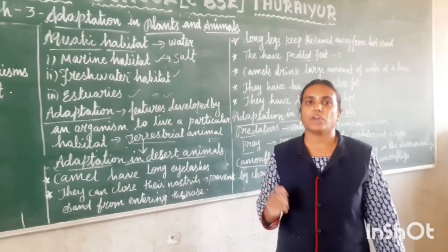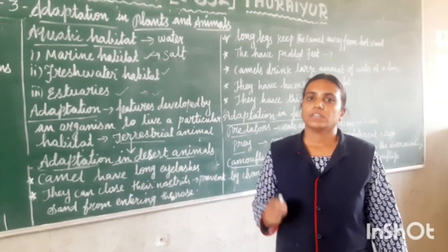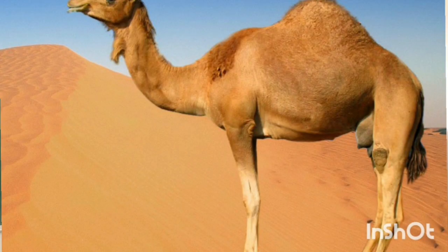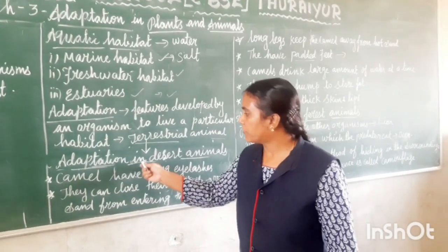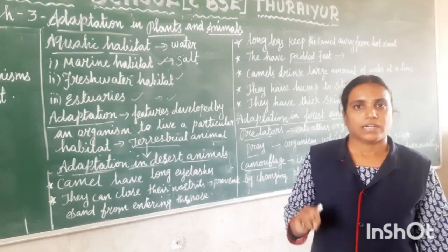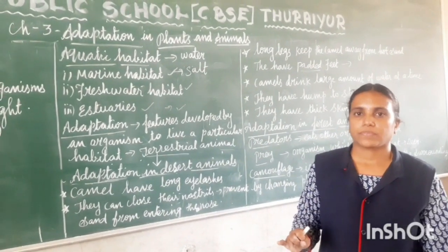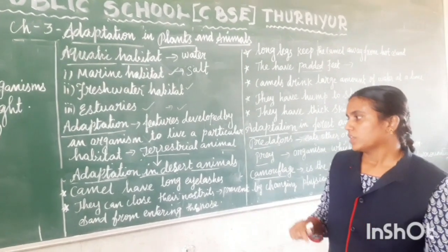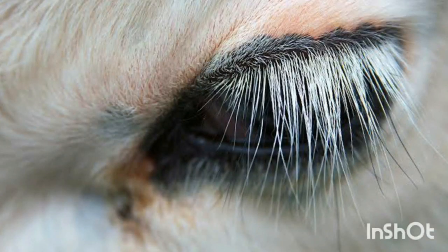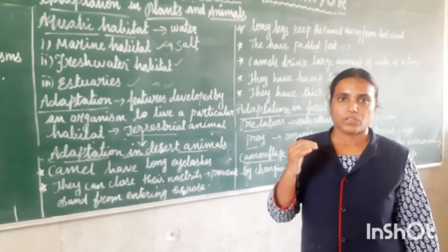Camel is called the ship of the desert. Animals found in the desert include camel, rattlesnake, and kangaroo rat. If you see the camel, they have long eyelashes and thick eyebrows to prevent sand from entering their eyes.